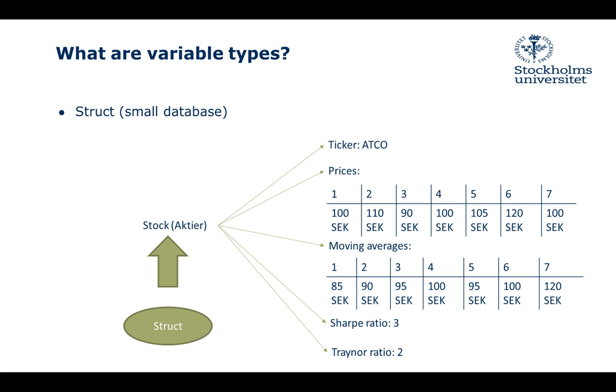Then it will have moving averages, Sharpe ratio, and Treynor ratio. This is how we're going to refer to each stock. We collect the stock ticker, collect the prices, calculate the moving averages, Sharpe ratio, and Treynor ratio, and store everything in one struct.